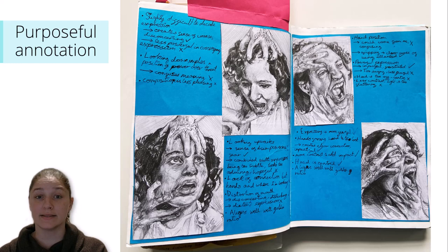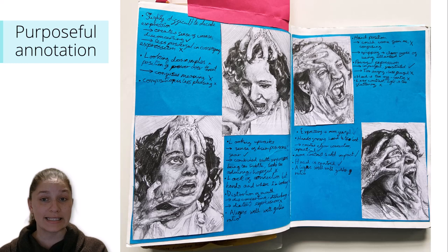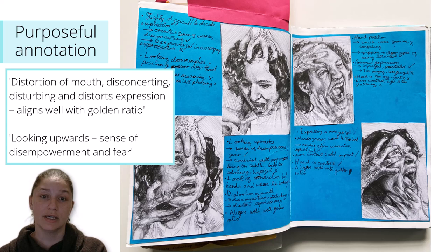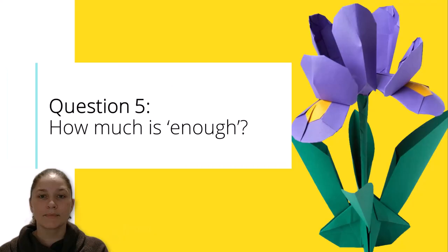This example shows a series of small preparation studies in pencil exploring composition and viewpoint. The candidate uses short bullet points in note form to analyse each drawing as a potential composition. The annotation is purposeful, insightful, and conveys deeper meaning to the candidate's intentions. For example, they state: distortion of mouth, disconcerting, disturbing, and distorts expression, aligns well with golden ratio. Also, looking upwards, sense of disempowerment and fear.